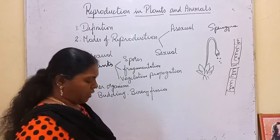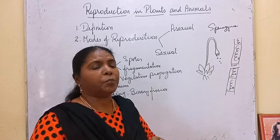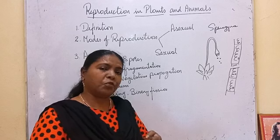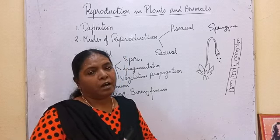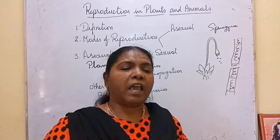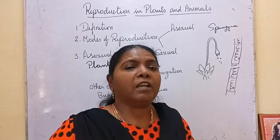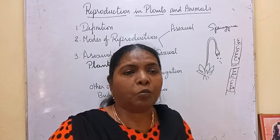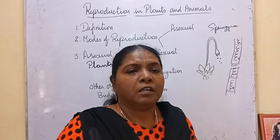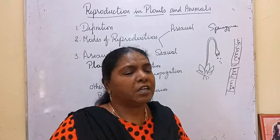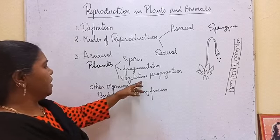Next comes vegetative propagation. The vegetative parts of a plant are root, stem, and leaves — these have their own functions but can also propagate. If any new plant is produced by the root, stem, or leaves, it comes under asexual reproduction. We will see the types of vegetative propagation shortly. Other organisms also reproduce asexually by budding and binary fission.